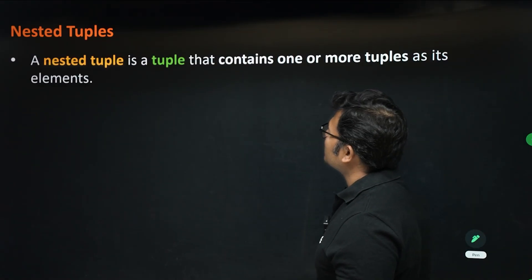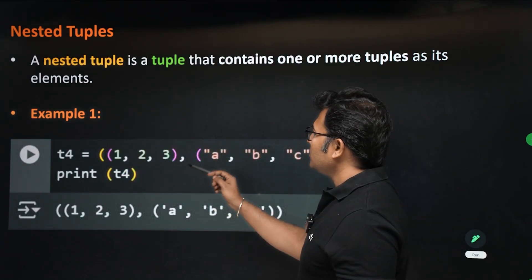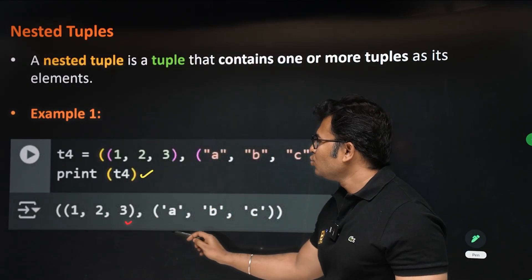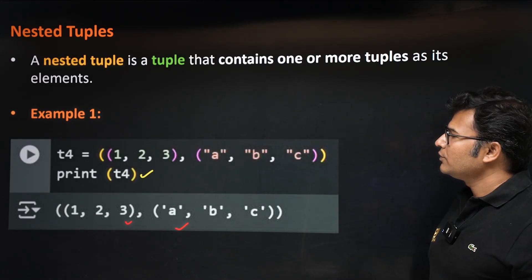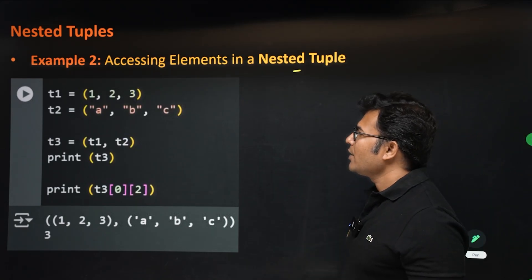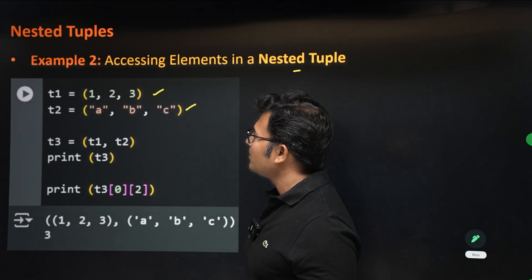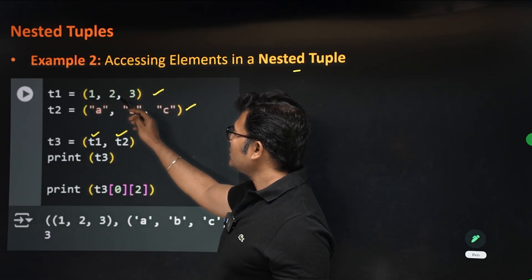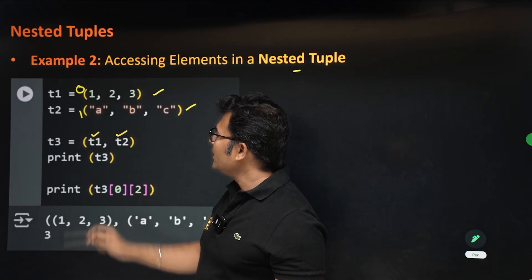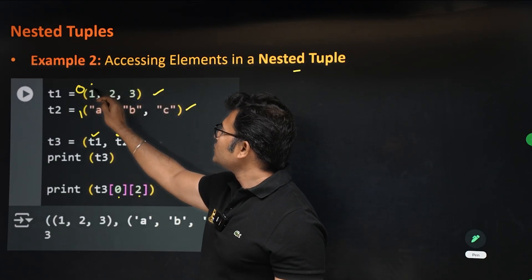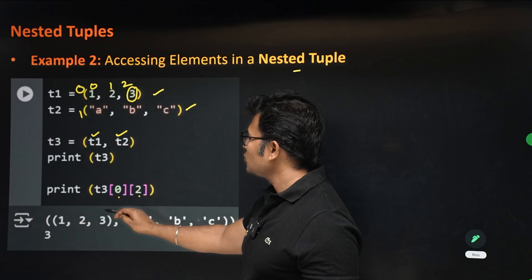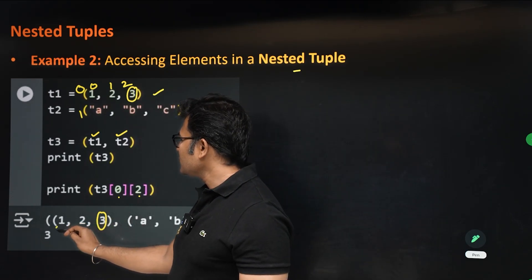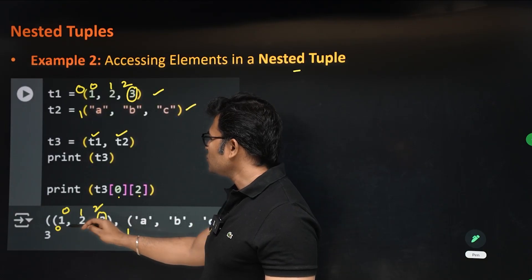A tuple which contains other tuples is called a nested tuple. For example, t4 can contain two tuples inside it. To access elements in a nested tuple: if t3 = (t1, t2), then t3[0] is t1 and t3[1] is t2. t3[0][2] accesses the third element of the first inner tuple, and t3[1][2] accesses the third element of the second inner tuple.